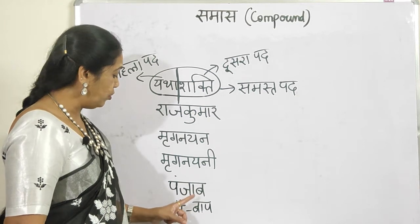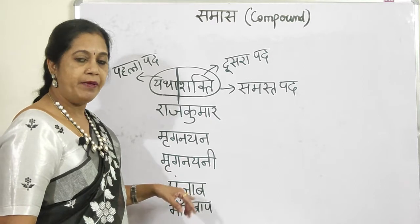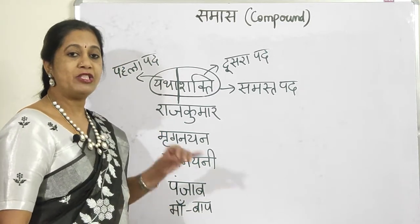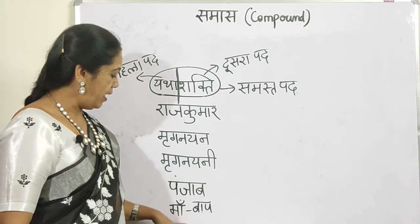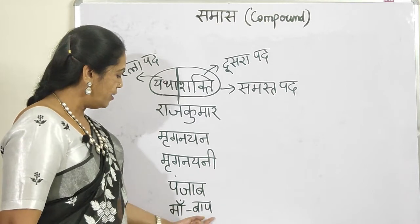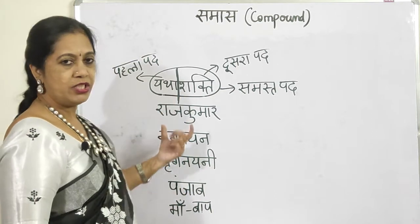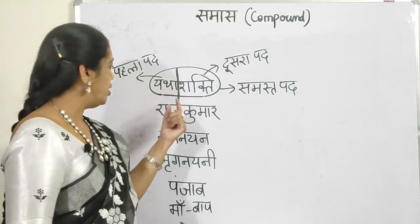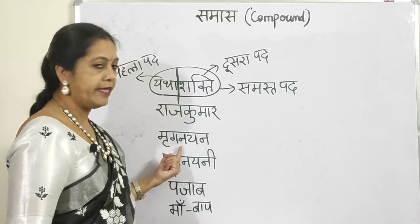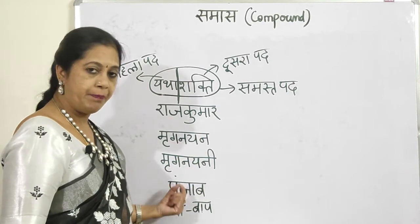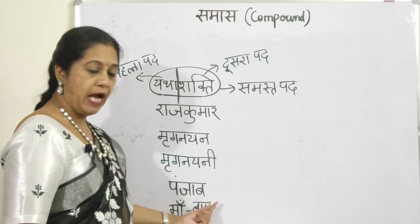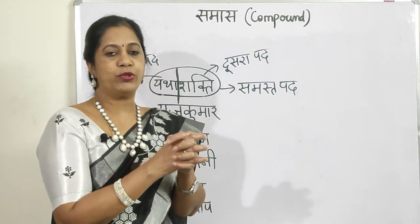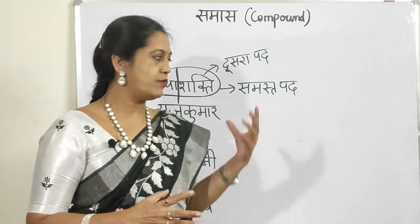In Dvigu Samas, the first part always has a number. For example, 'Punjab' — Panj (five) plus Ab (rivers) — Panch abo ka Samuha, meaning a collection of five rivers. The first part 'Panj' is a number, so this is Dvigu Samas. For Dvandva Samas, take 'Ma-Baap' (mother-father) — two words, often opposites or pairs, joined together. Both words are important. So I've given one example each for all six types: Avyaibhav, Tathpurush, Karmadhare, Bahubrihi, Dvigu, and Dvandva.